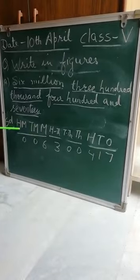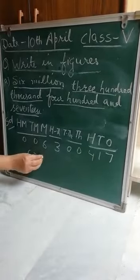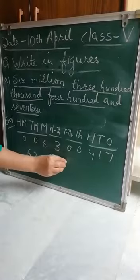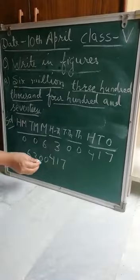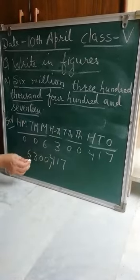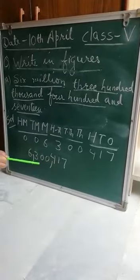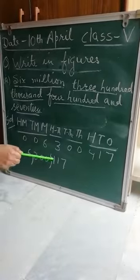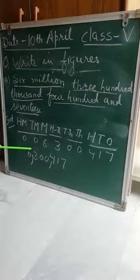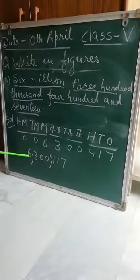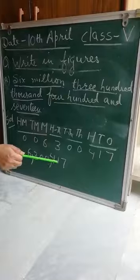This is the international system. We write the number and do the grouping from the right side, from the back — groups of 3, 3, 3. Now our answer is 6,300,417. After each comma, you have to tell the period of the question: 6 million, 300 thousand, and 417. Thank you.